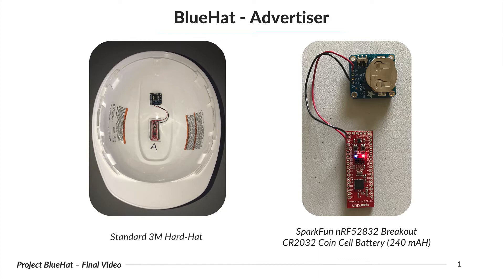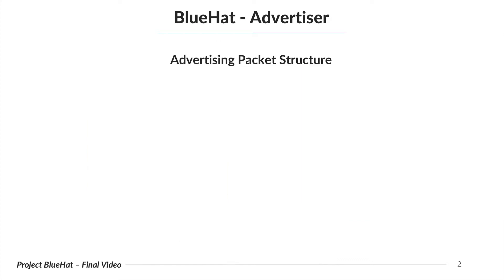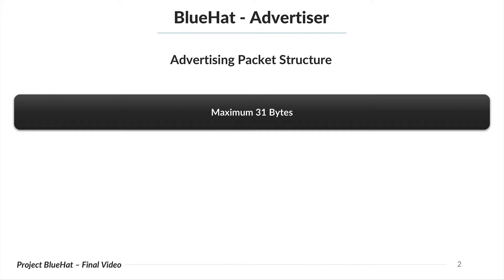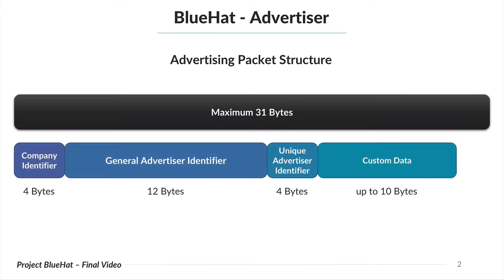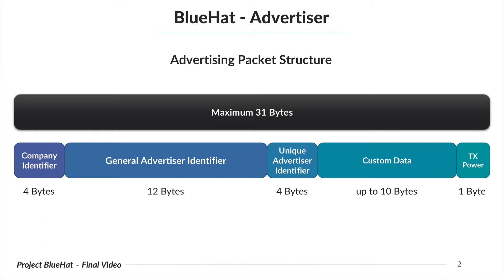This advertising device and our hardhats are capable of sending 31 bytes of data per a set interval ranging from 100 milliseconds to 10 seconds. These 31 bytes are broken up as seen here. The important portions are the identifier bytes and custom data bytes. There are a total of 20 identifier bytes where the unique identifier bytes are specific to one Blue Hat. The custom data bytes of this packet is where we can integrate data from biosensors or accelerometers.